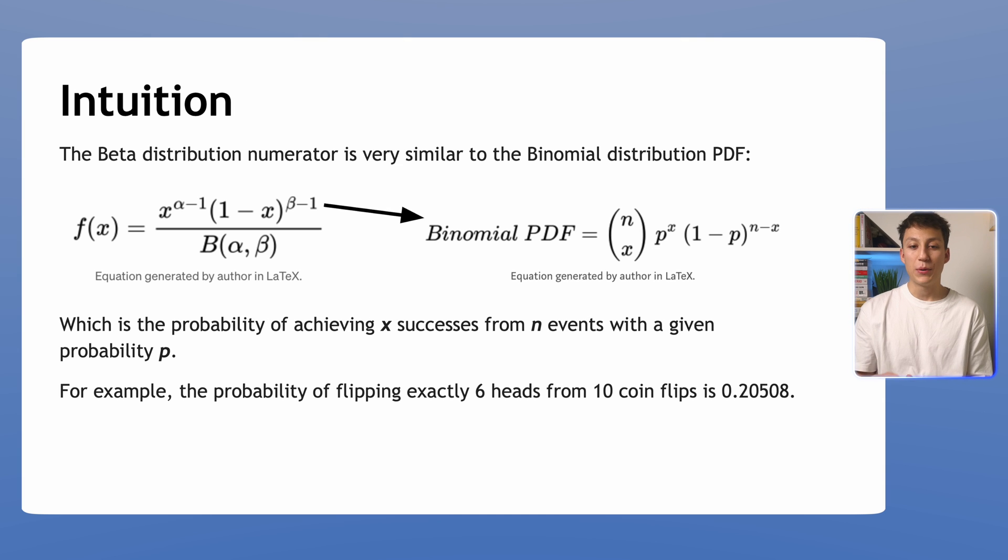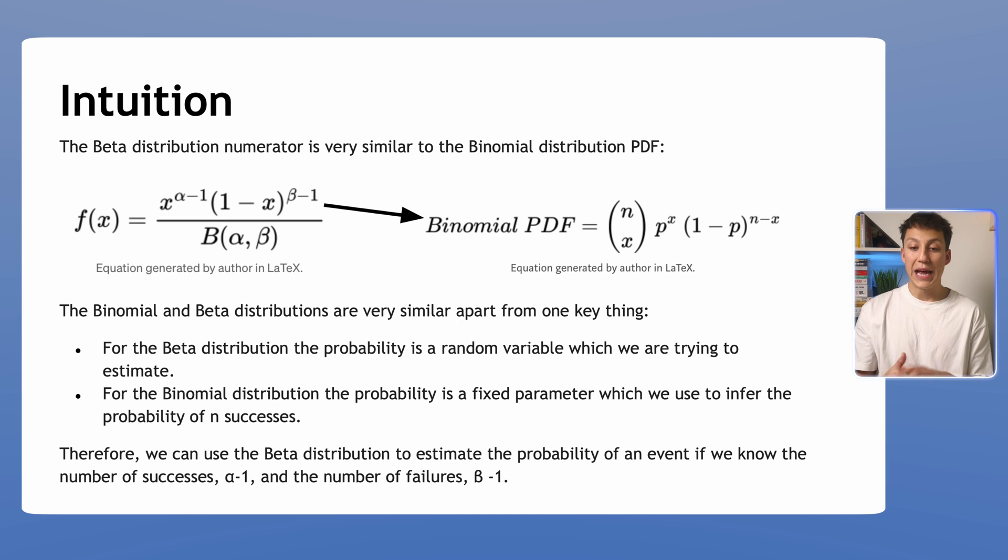Let's now build this picture up of what the beta distribution really is. The numerator of the beta distribution you may notice is in fact very similar to the binomial where for the binomial what we have is the probability of achieving x successes from n events with a given probability p. That is what the binomial distribution is trying to do. For example, the probability of flipping six heads from 10 coin flips is roughly 20% assuming we have a 50% chance of landing on heads. They look very similar here and you can see the layout is kind of analogous, but there's one key feature.